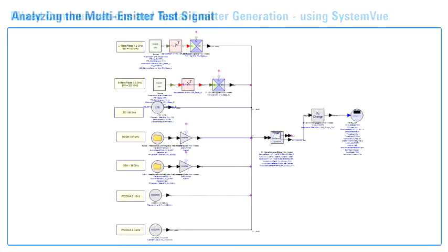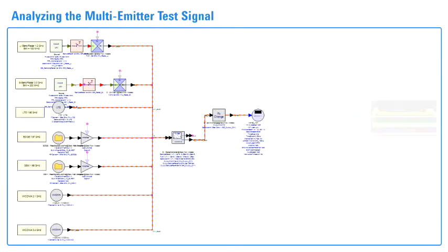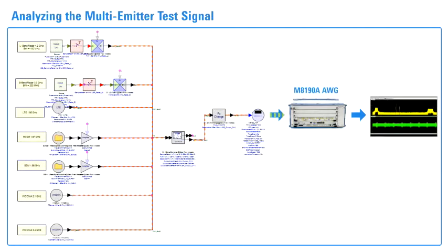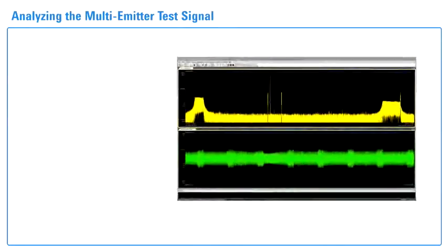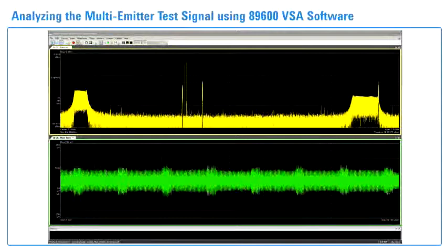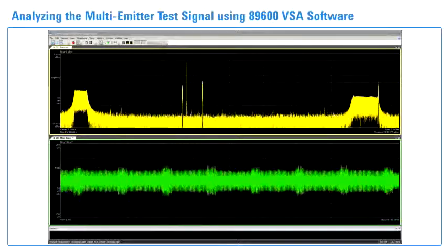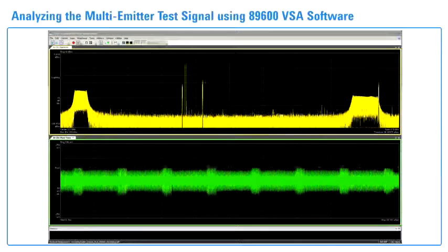These are all combined using the signal combiner element, which re-samples and combines the radar and wireless comms emitter signals so that they can be downloaded to the M8190A AWG to create the multi-emitter test signal. This is the resulting multi-emitter test signal from SystemVue and the M8190A AWG as measured on the Infinium oscilloscope using the 89600 VSA software.